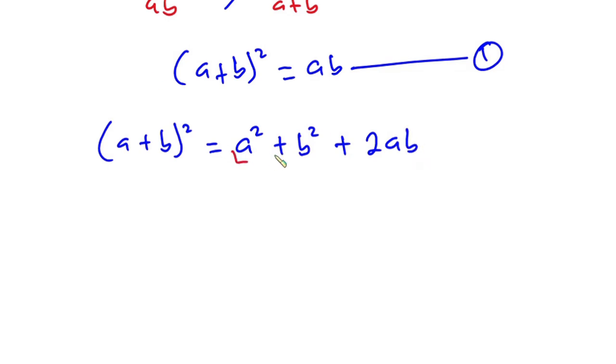Now from here I'm going to make a squared plus b squared the subject. So we have a squared plus b squared is equal to a plus b squared minus 2ab, and I'll call this equation 2.